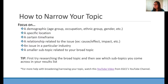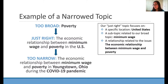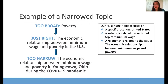Now we're going to talk about how to narrow the topic of poverty. Our just-right topic is focusing in on a specific location, a subtopic, and a relationship related to the issue of poverty. We're looking at the economic relationship between minimum wage and poverty in the U.S. There is, however, a way to make our topic too narrow — such as the economic relationship between minimum wage and poverty in Youngstown, Ohio, during the COVID-19 pandemic. If we searched for this, we'd probably get one or two, maybe zero results, because the location is too small and the time period may not have enough published research yet. So you want to rework your topic until you're finding a good amount of information — generally results in the thousand to two thousand range.